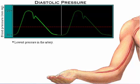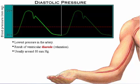Diastolic pressure represents the lowest pressure in the artery, which is the result of ventricular diastole — relaxation. Diastolic pressure is usually around 80 millimeters of mercury.